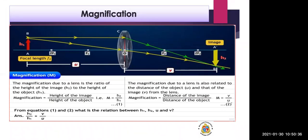We compare the image with respect to the object. Whatever the size of the object and whatever the distance, we measure whether the image is smaller, larger, or magnified. The height of the image is written in the numerator and the height of the object in the denominator since we are comparing image height to object height.